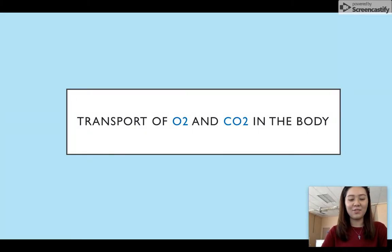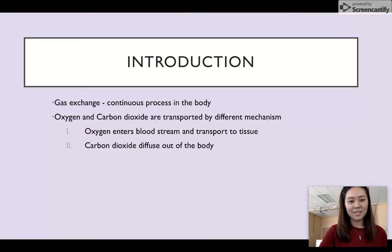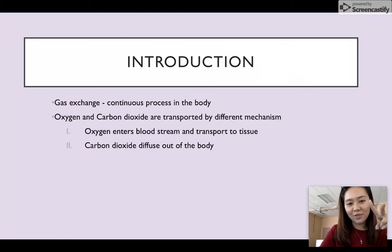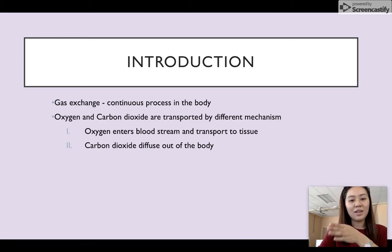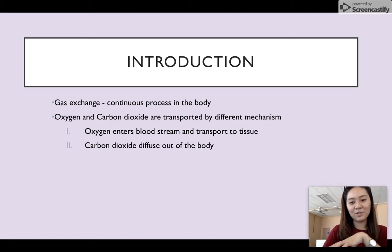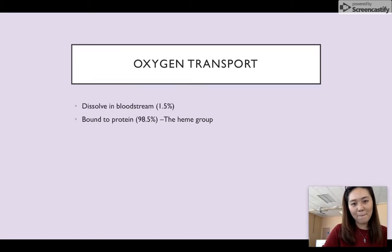Today we're going to talk about transport of oxygen and carbon dioxide in the body. Gas exchange is a continuous process in the body. There are two gases involved, which are oxygen and carbon dioxide. These two gases are transported by different mechanisms. Oxygen will enter the body through the bloodstream and transport to tissue, while carbon dioxide will diffuse out of the body.